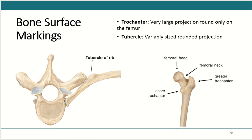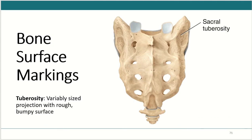Next we have the trochanter — a very large projection found only on the femur, where we see a lot of muscle attachments. We've got the greater trochanter and the lesser trochanter. There are also tubercles, which vary in size but are rounded projections, such as the tubercle of the rib. And last, we have tuberosities — also variable in size — projections with rough, bumpy surfaces, such as the sacral tuberosity, which is a great place for connective tissue to attach.